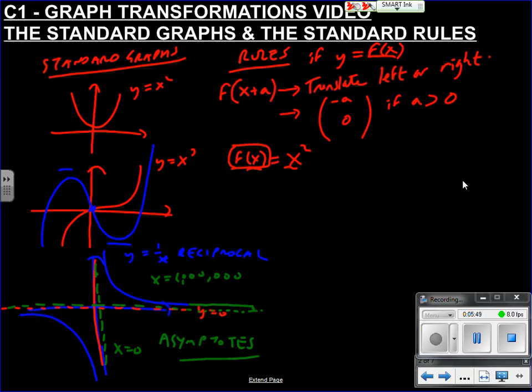So, let's think about it. If we have f of x equals x squared, and I want to look at f of x plus 2, which is, that replaces the x, x plus 2 squared. Well, what does that look like? Let's look at y equals x plus 2 squared.